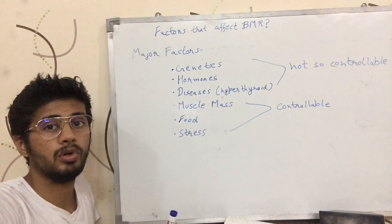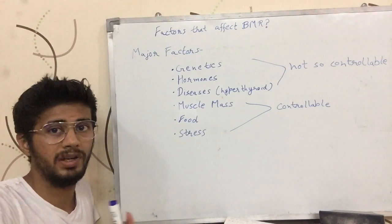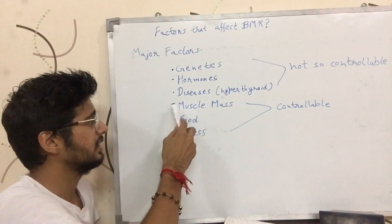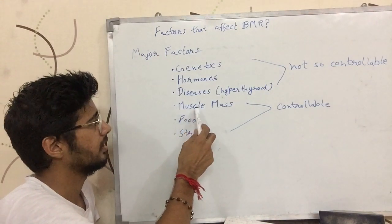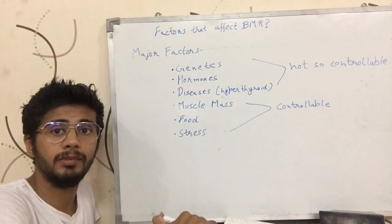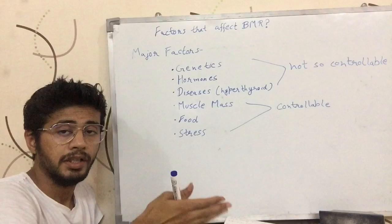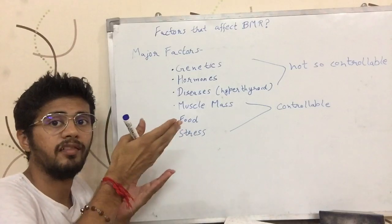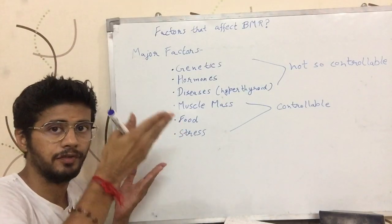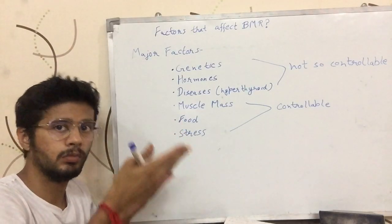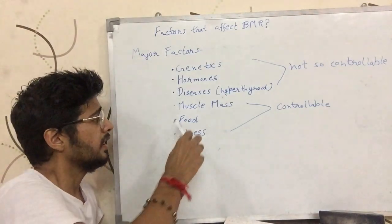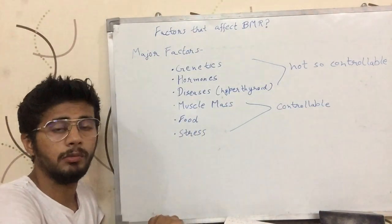Now the other three factors are more controllable. The first is muscle mass — the amount of muscle mass you have. If you have more muscle mass, you are going to have a higher BMR. If you have lesser muscle in your body, you are going to have a lesser BMR.